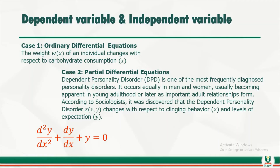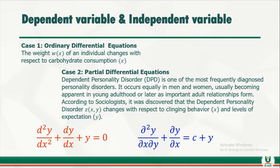Case 2 involves partial differential equations. Consider dependent personality disorder, called DPD. Sociologists have found that DPD, which we can call z, changes with respect to clinging behavior, which is x, and the level of expectation, which is y. This is an example of a partial differential equation — we have one dependent variable and two independent variables.